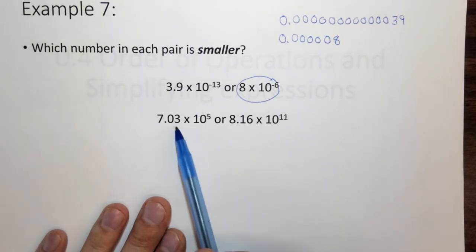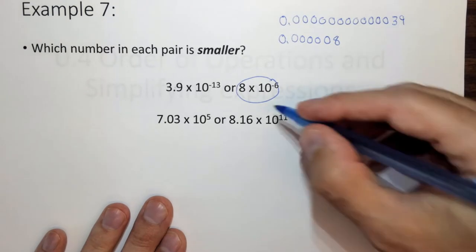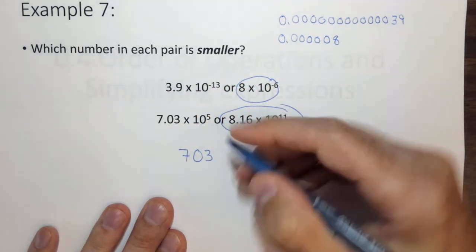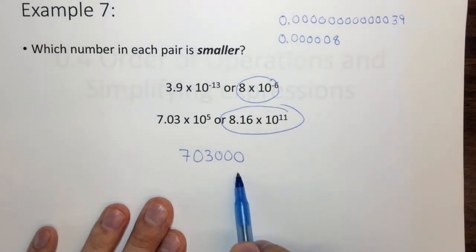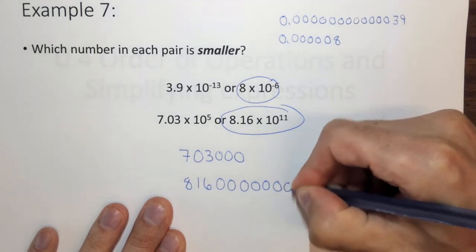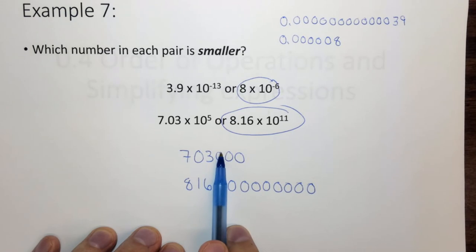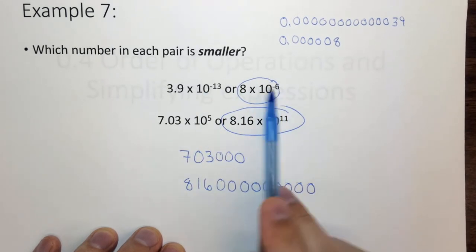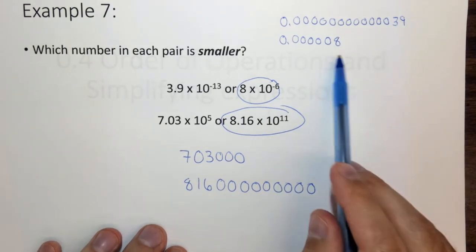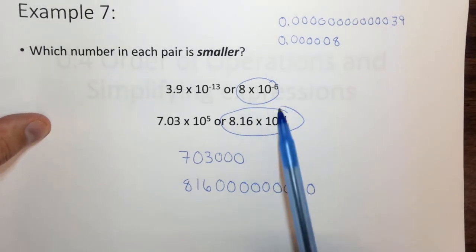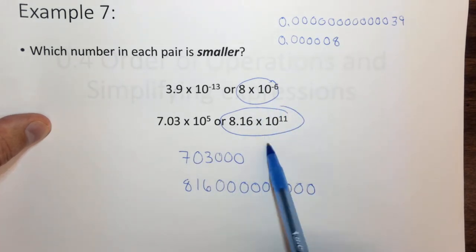With positive exponents it's straightforward: the bigger the positive exponent, the larger the number. 7.03 times 10 to the 5 gives a number with 6 digits, while 8.16 times 10 to the 11 gives a much larger number. So for positive exponents, a greater exponent means a greater number. These have been some examples of scientific notation — multiplying, dividing, and comparing numbers in scientific notation comes up fairly often in chemistry.